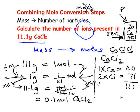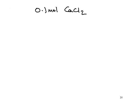I'm going to transfer that figure to the next step. We've got 0.1 mol of calcium chloride. At this stage, I've taken a mass and changed it into moles. I'm now going to change it into numbers — number of ions in this case, as we've been asked.